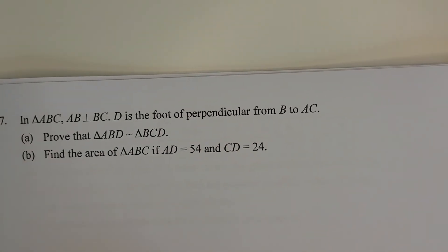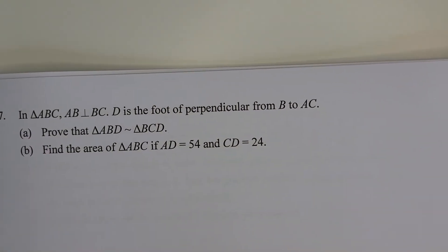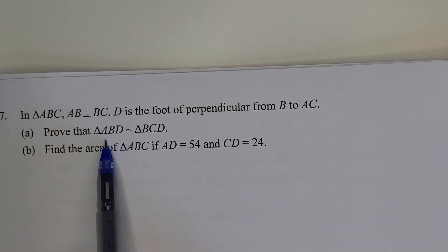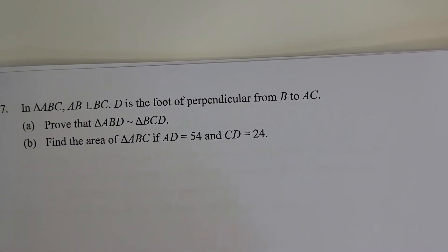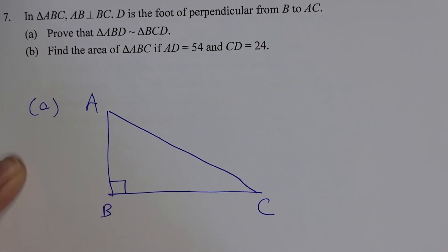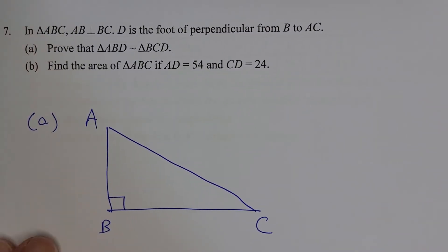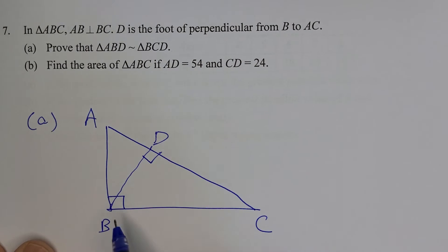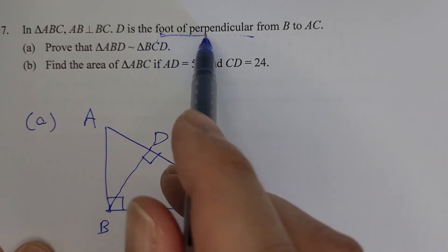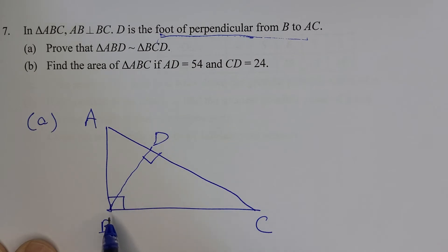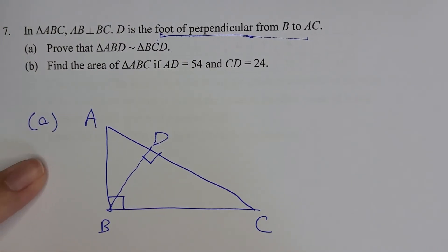Question number seven: in triangle ABC, AB is perpendicular to BC. D is the foot of the perpendicular from B to AC. Part a: prove that triangle ABD is similar to triangle BCD. When you see such a question, draw the figure yourself — place A, B, C with AB perpendicular to BC, and draw BD perpendicular to AC. Now set up the proof.